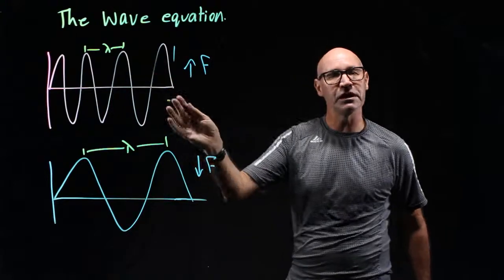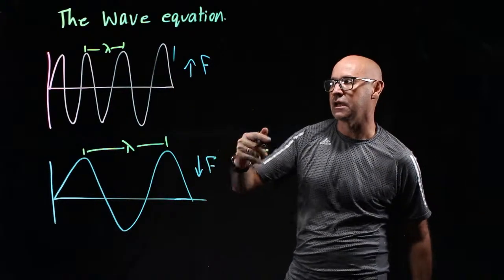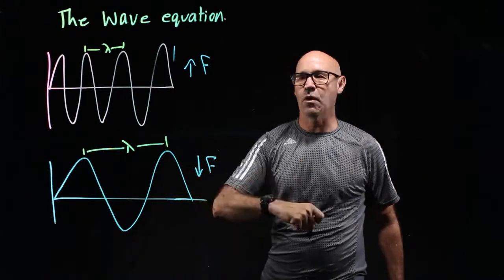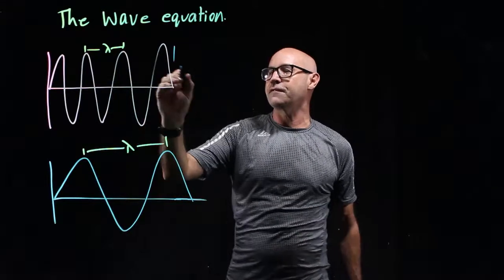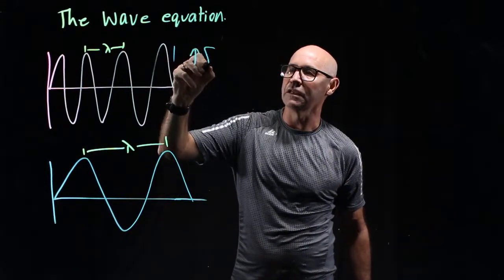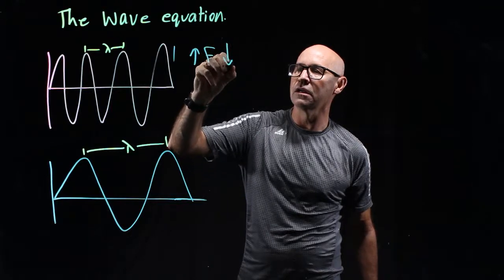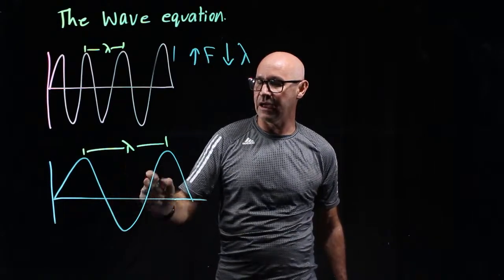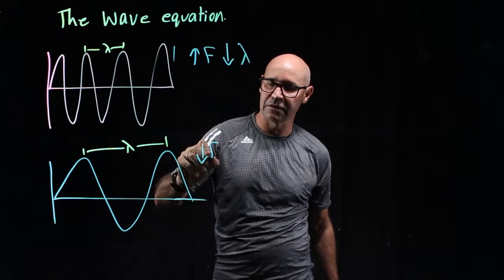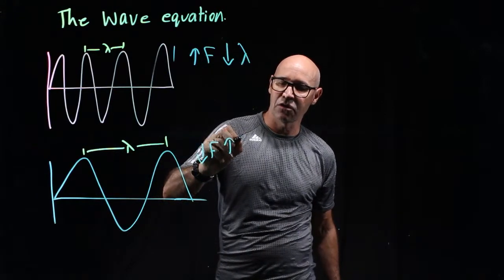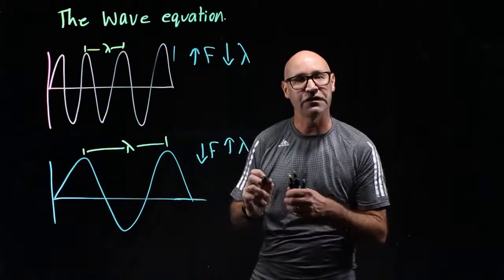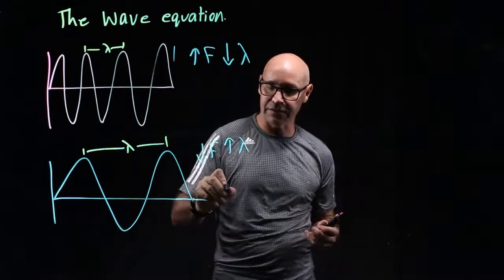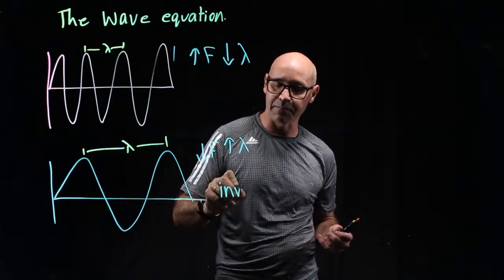So there's actually a relationship between frequency and wavelength. This wave here has a higher frequency and a lower wavelength. This one here has a lower frequency and a higher wavelength. So what we can say about frequency and wavelength is that they are inversely proportional.